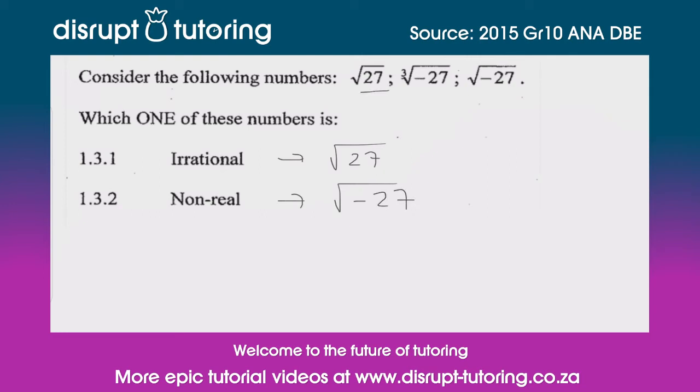So that means we've used the square root of 27 and the square root of negative 27. Let's just check that we didn't make a mistake on our cube root of negative 27. We know the cube root of negative 27 does exist and it equals negative 3. What that means is negative 3 is an integer, and that means it is a rational number and not an irrational number. So that seems like we've made the right decisions here.